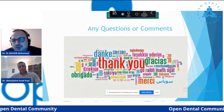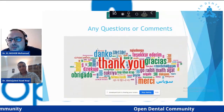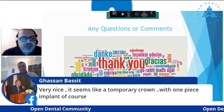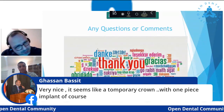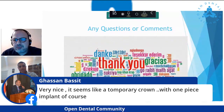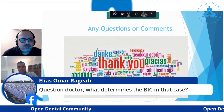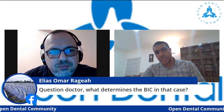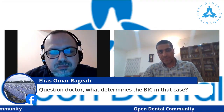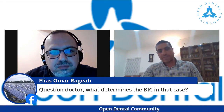The first question: it seems like a temporary crown with one-piece implant — are you making a temporary crown or only fixing the cervical profile? I do both. We make a customized healing abutment to get a nice emergence profile, and additionally make a temporary crown for the patient, and splint that crown to the adjacent tooth. So we get many benefits from this approach.